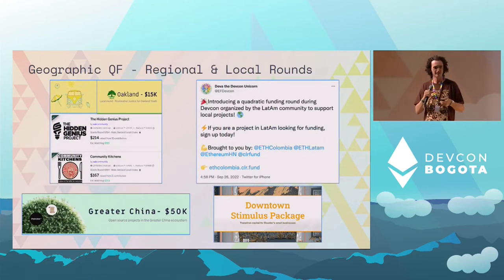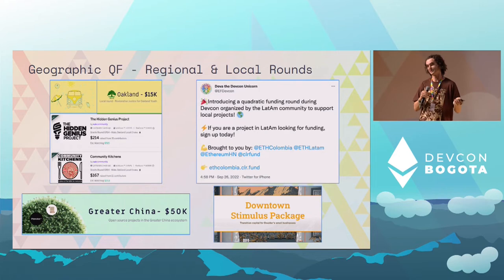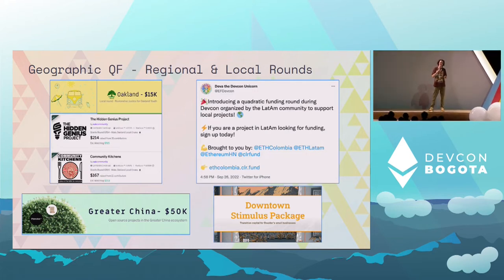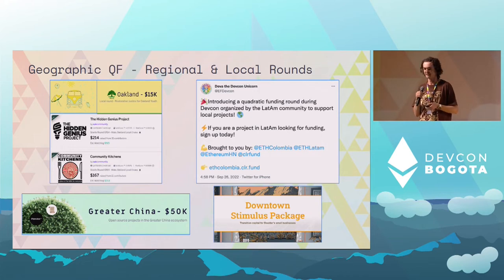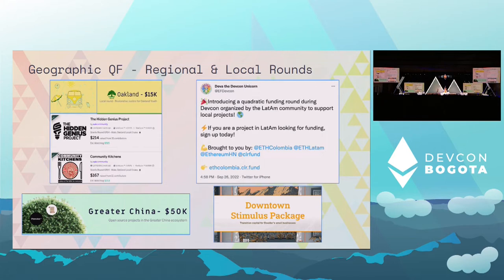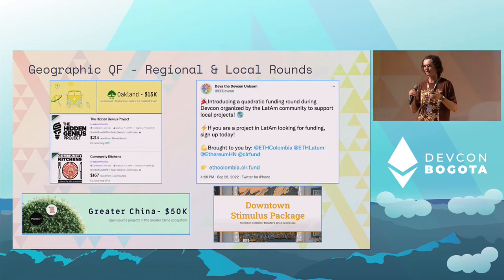I want to mention geographic QF rounds — regional and local rounds. I want to call out specifically the DevCon Latin America-focused CLR fund round happening now. Gitcoin isn't directly involved, but we work with CLR fund and everyone should check it out, as they're utilizing some mechanisms I'll mention later. As Gitcoin, we've done an Oakland youth charity-focused round, a China crypto ecosystem round, and a downtown stimulus round during COVID focused on Boulder, Colorado, reviving local businesses. We're all experts at what's right in front of us in our communities — this mechanism can really help fund localized public goods that have an impact in your neighborhood or town.